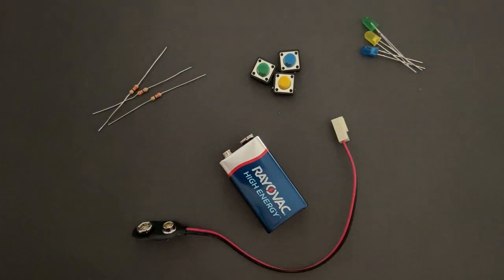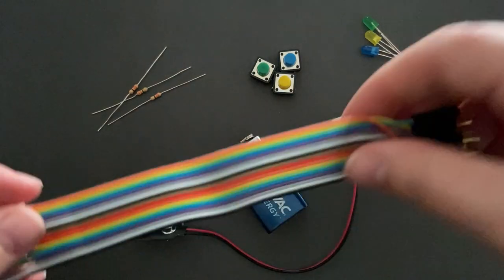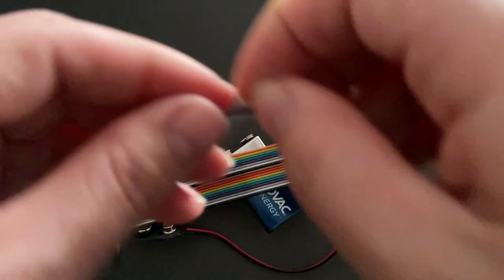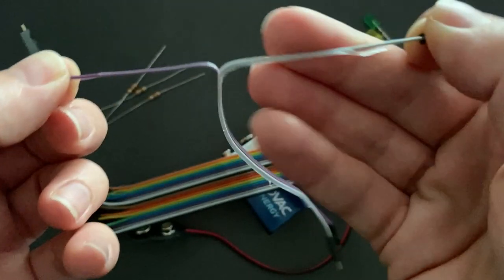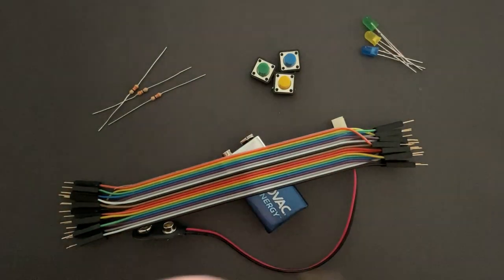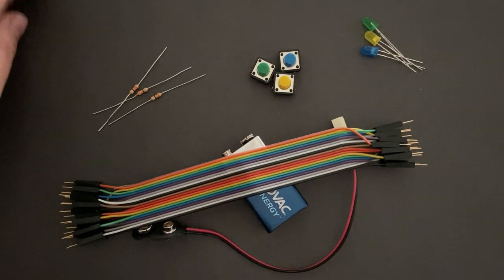You also need some jumper wires. They come on a strip like this. To use them, just grab a wire and pull it. If you happen to break one, it's ok, you have plenty of spares. Also, colors don't mean anything specific, you can use whatever colors you like.